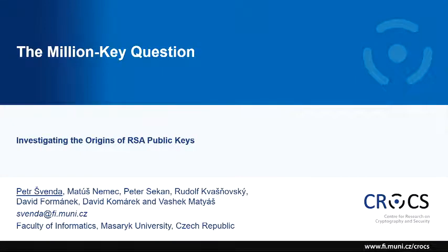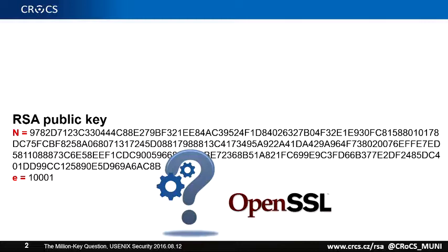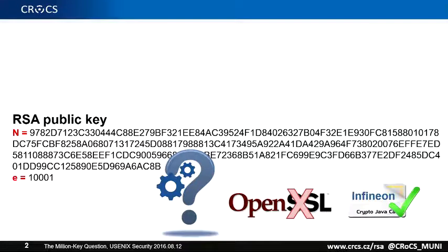Welcome. My name is Peter, and this is joint work with my colleagues from Masaryk University. The question we are trying to answer is relatively simple. This is an ordinary RSA public key — nothing special about it. The question is: which particular software library generated this key? The good guess would be OpenSSL, because so many keys are generated by OpenSSL. But it can't be OpenSSL. OpenSSL will never generate a key like this. In fact, it was some Infineon cryptographic smart card.